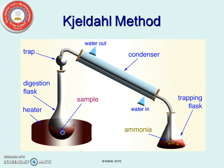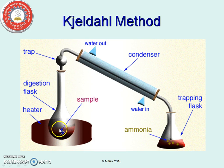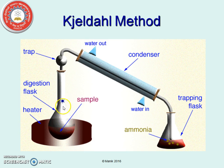This is the apparatus which is used in Kjeldahl's method. Here we have the sample, the organic compound, which is present in H₂SO₄. It is being heated and we are going to get ammonium sulfate. This ammonium sulfate is converted into free ammonia with the help of alkali. When we add alkali, the ammonia gas will evolve, and it will pass through this condenser and go into the trapping solution.